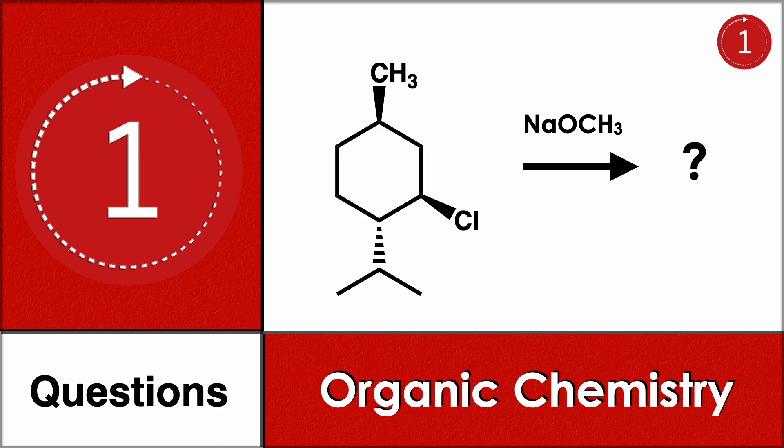Welcome to One Chemistry. This is the organic chemistry series — daily one question for you. Here you have cyclohexane with methyl, chloro, and isopropyl groups, all stereochemically specified, reacting with sodium methoxide. You should find what will be the final product.